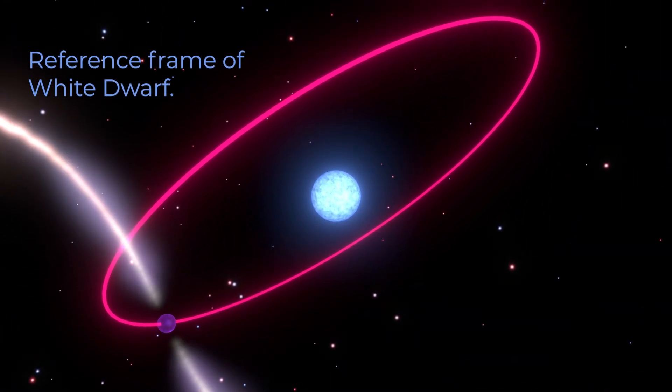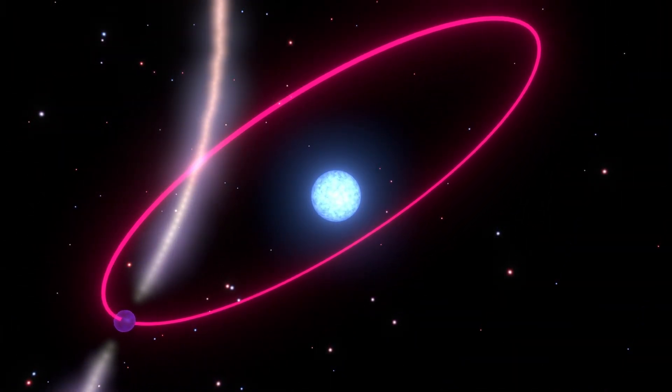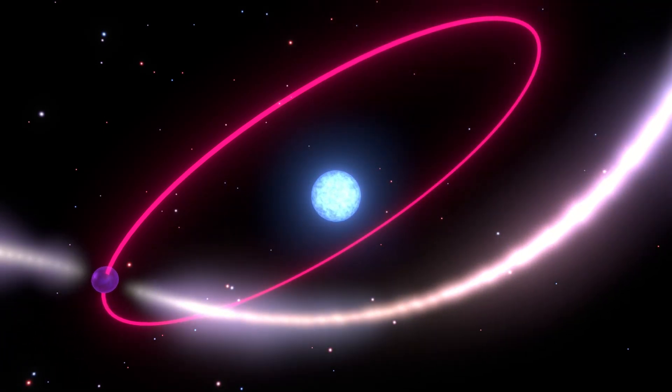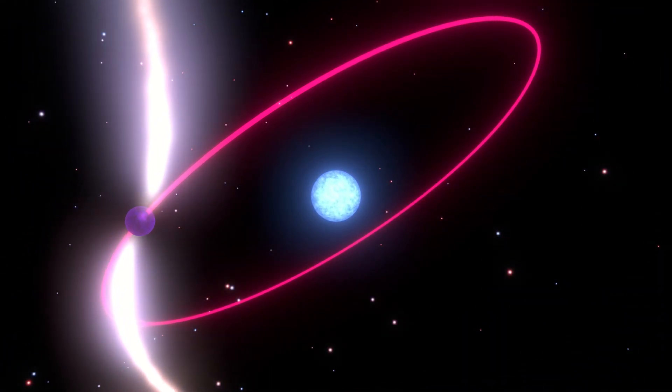We found that not only is the pulsar's orbit shrinking because of the emission of gravitational waves, its entire orbit was also tumbling in space. But why?